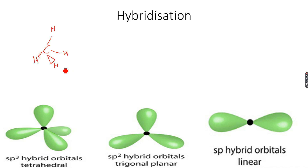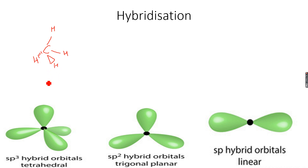A wedge is basically drawn to show bonds that are coming out of the plane, because this is a 3D geometry, not a 2D geometry. A dash is drawn to show bonds going into the plane. So the straight lines are the bonds in the plane of the paper, the wedges are the bonds coming out of the plane of the paper, and the dashes are the bonds going into the plane of the paper. That's what you need to remember about wedges and dashes.